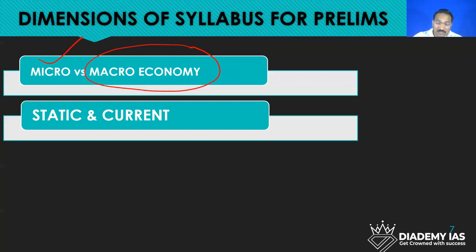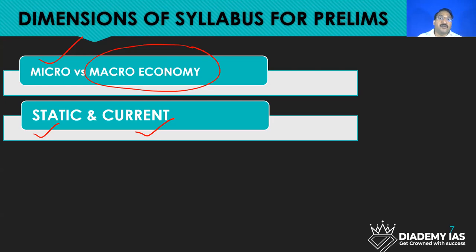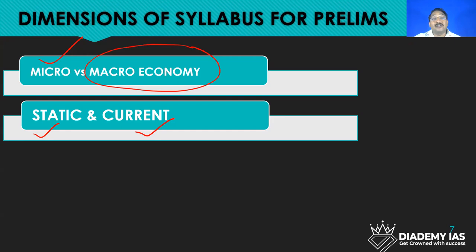The syllabus has both current and static components, and it is very difficult to segregate. We cannot really say whether a question is from current affairs or static. So whenever we are reading current affairs, we have to look for the concept behind that topic. Similarly, when reading the static portion, we have to see what current affairs news relates to that concept. It is really difficult to segregate.